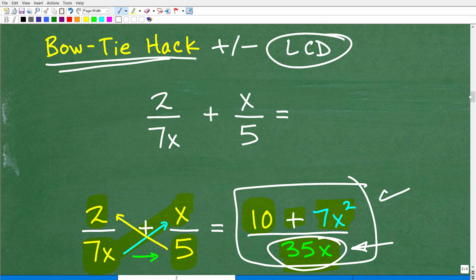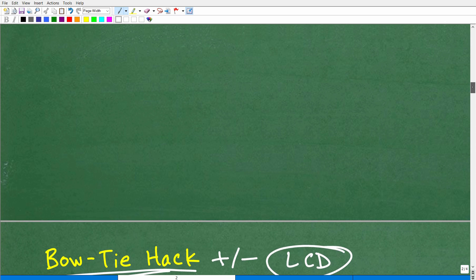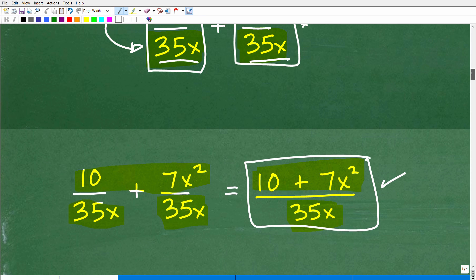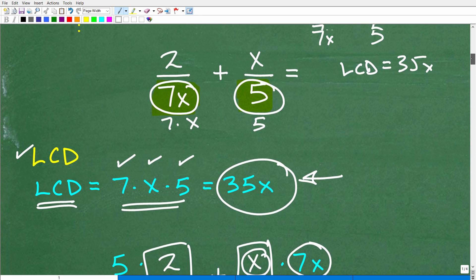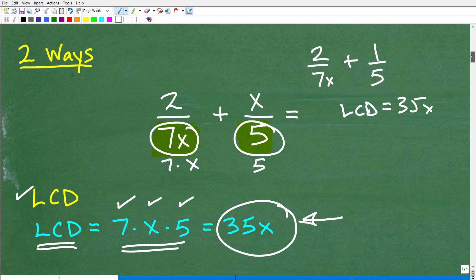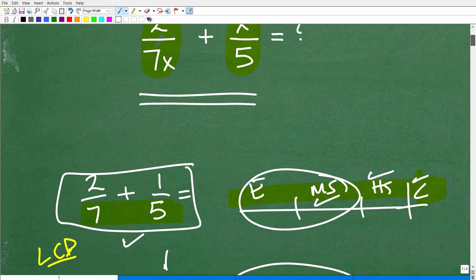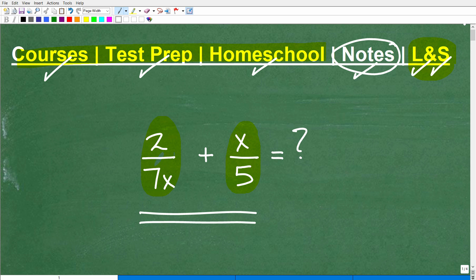And this is super, super handy in algebra. So you absolutely must know. But anyways, whether you use the bowtie technique, if you knew it, okay, that's what I call it. But if you just knew to do that, or if you use the lowest common denominator, either way, if you got this correct, that's very, very good.